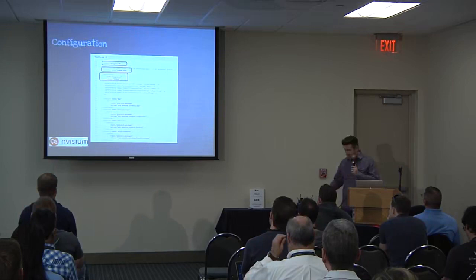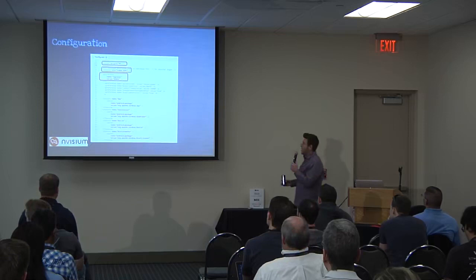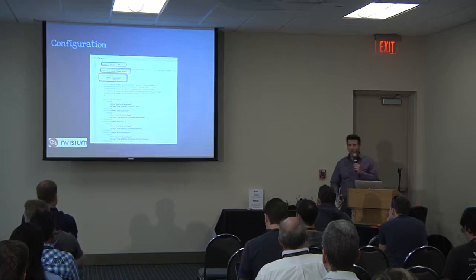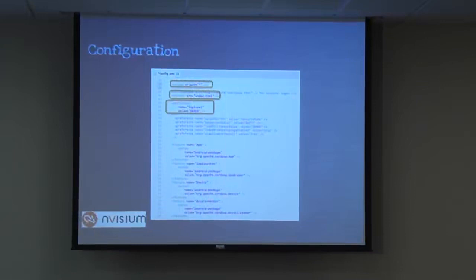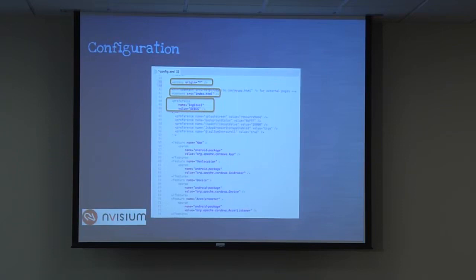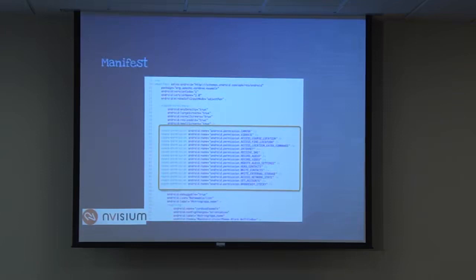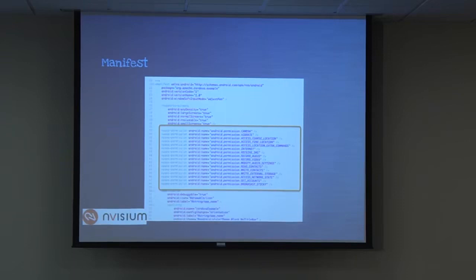Both iOS and Android have a configuration file. At the top is the access origin setting, which whitelists which domains can load web code in your application — and the default is an asterisk, allowing everything. By default the app loads from a local index.html, but most applications also pull code from the web. A large set of plugins is enabled by default, and on Android there's also a manifest file where permissions are requested — PhoneGap enables a large set of permissions when you create a new project.